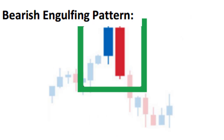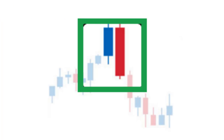Bearish engulfing pattern is just the mirror image of the bullish engulfing pattern with bearish implications. First, we should have an uptrend, then a green candle. The next day should see a gap up above the close of the previous day. The second day's candle should eventually close red, with its body totally engulfing the body of the first candle. Confirmation comes when within the next two to three candles the price moves below the low of the two candles. On confirmation, a trader may take a short trade with stop loss above the top of the two candlestick patterns. Larger the second candle, more bearish is the pattern.